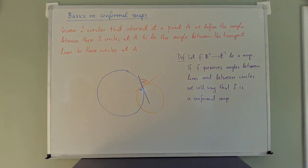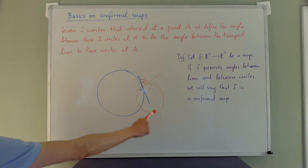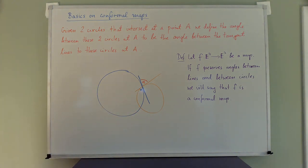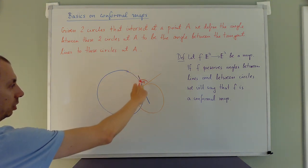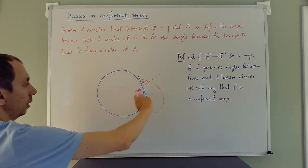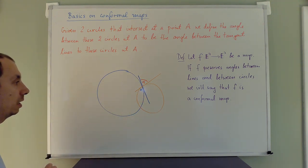So here is the definition for what it means for two circles to intersect at a certain angle. Given two circles — the blue circle and the orange circle — they intersect at the point A. We define the angle between these two circles at A, the point of intersection, to be the angle between the tangent lines to these circles. At point A, I draw a tangent line to the blue circle, then a tangent line to the orange circle, and the angle between those tangent lines is the angle between the circles.